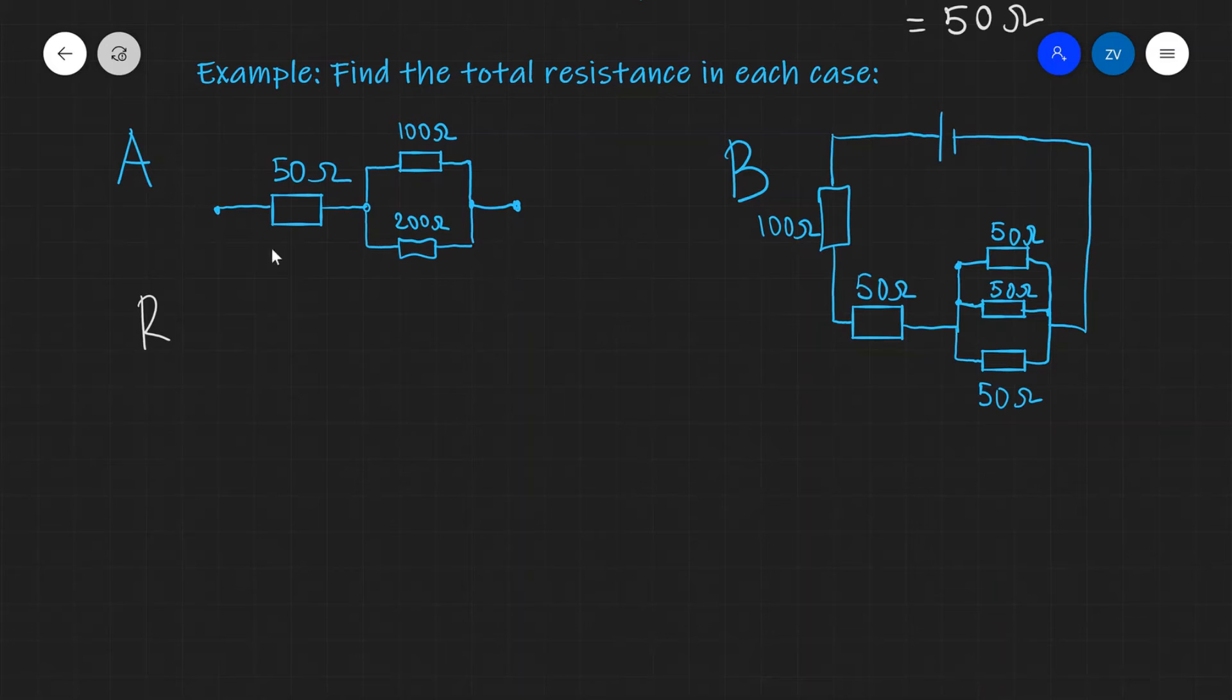So for the first case our total resistance will be 50 plus the resistance across the parallel branch which is found by 1 over 100 plus 1 over 200 raised to the power of minus 1 which is going to be 50 plus 66.7 which is going to give us about 116.7 and let's say that this is equal to about 117 ohms to three significant figures.